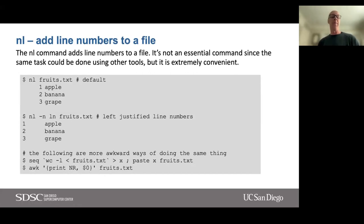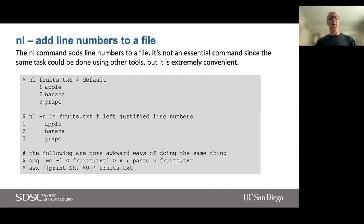The next command I'm going to cover is called nl. What this does is add line numbers to a file. I actually learned this one fairly recently. I'm not going to consider it to be an essential command because there are other ways to do this using other tools, and the options are a little awkward. If we just do `nl` followed by the name of our file, it's going to output that file with each line prepended by a line number. So `nl fruits.txt` gives us: 1 apple, 2 banana, 3 grape.